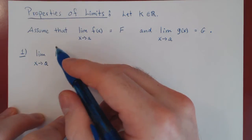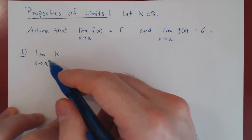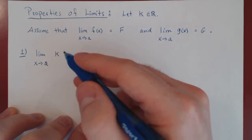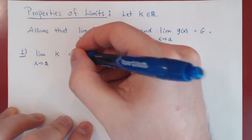And so this is pretty obvious. k is a constant. k is always equal to k. And so as x is getting closer and closer to a, k is always k. And so k is approaching k.